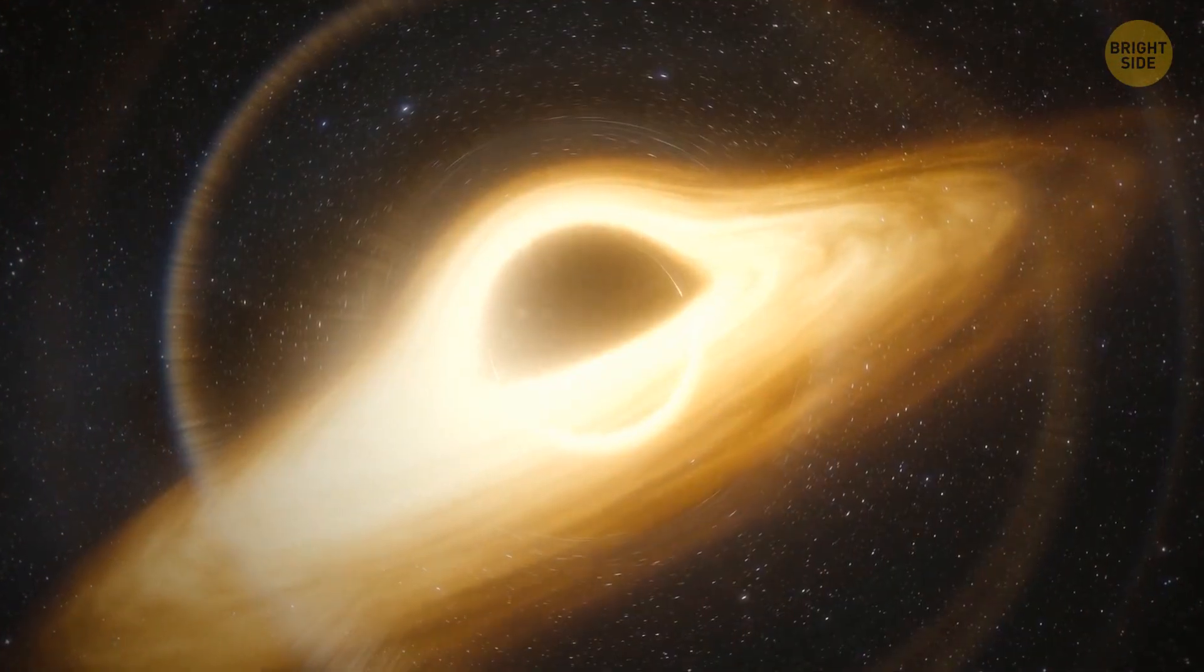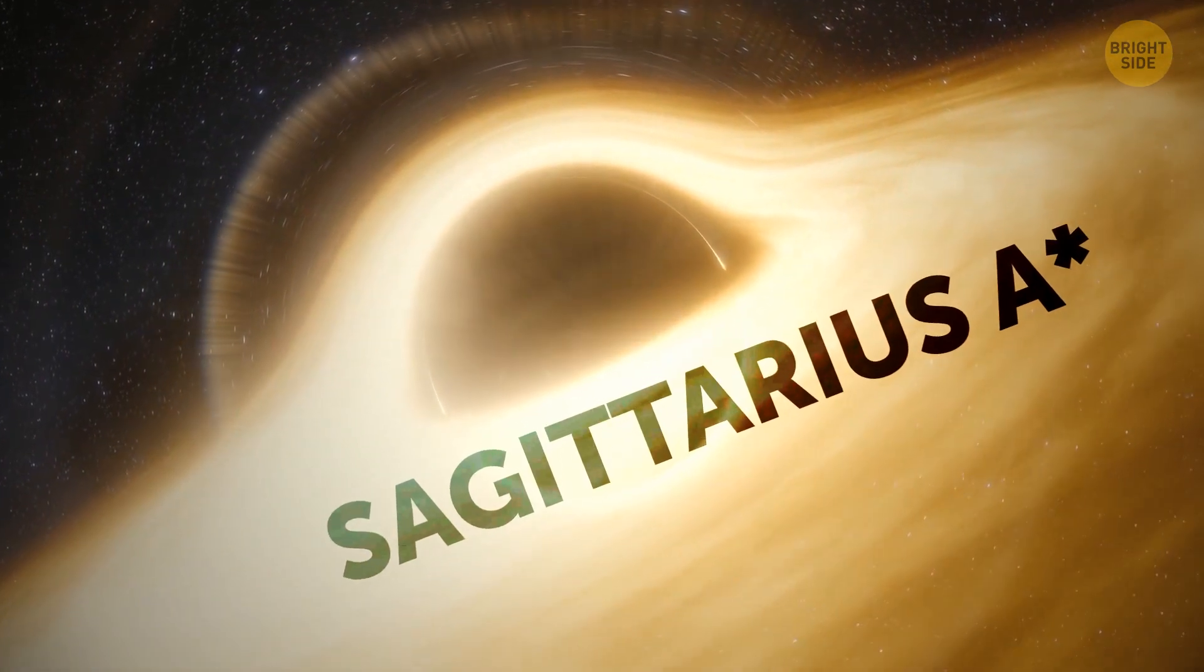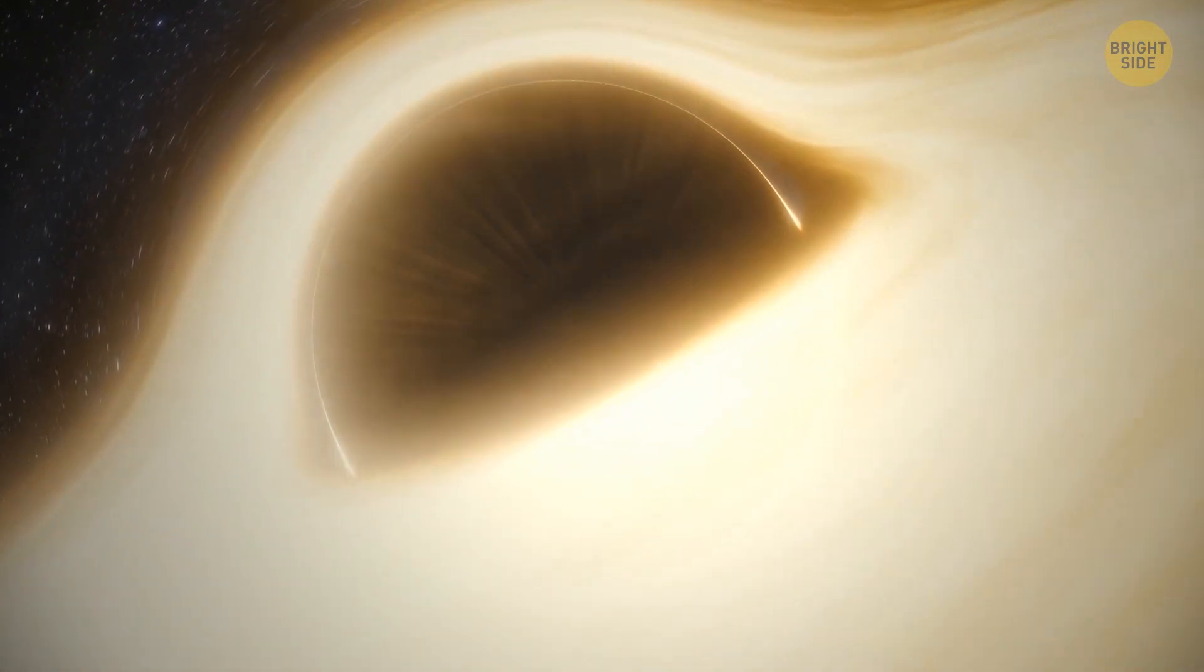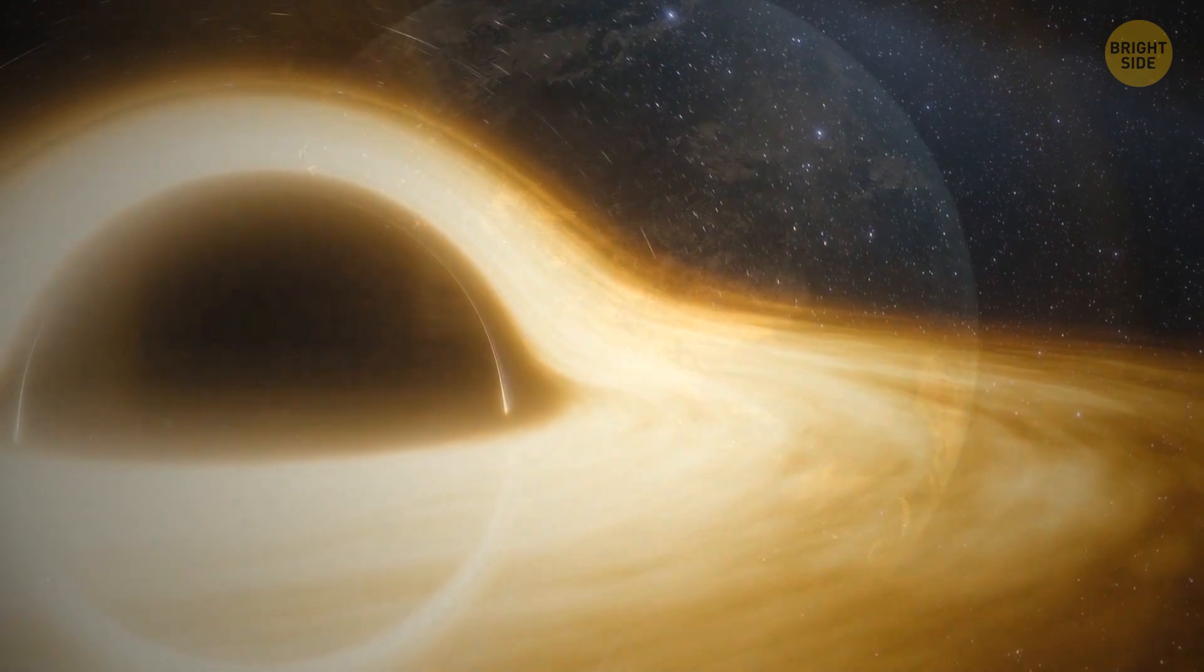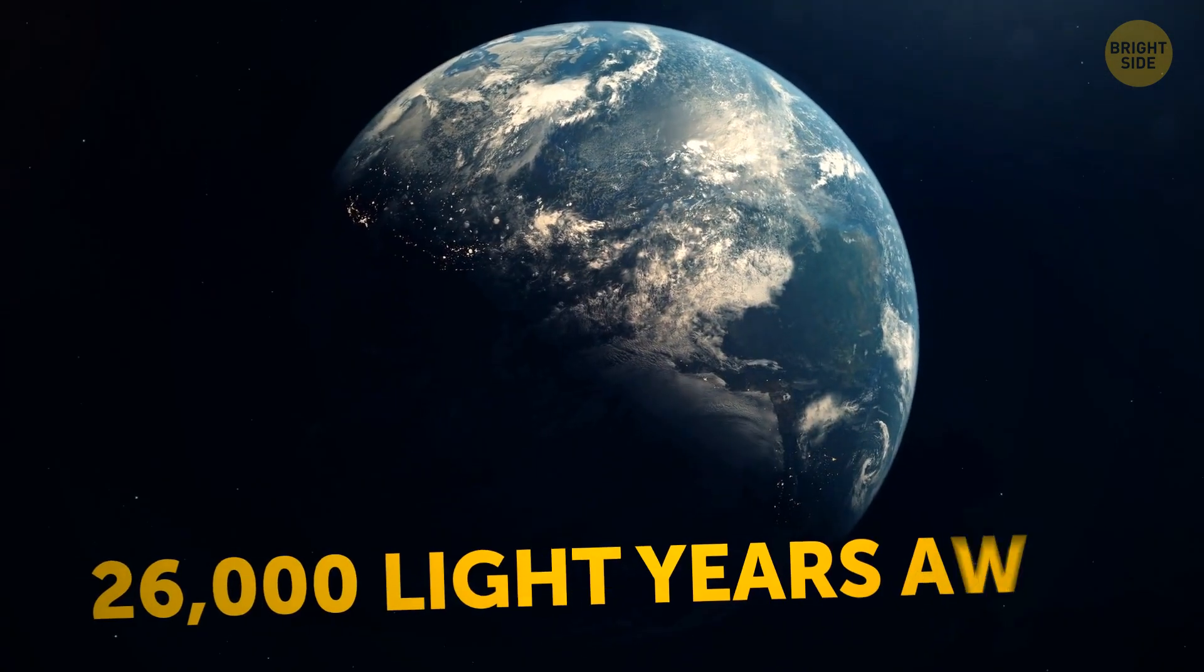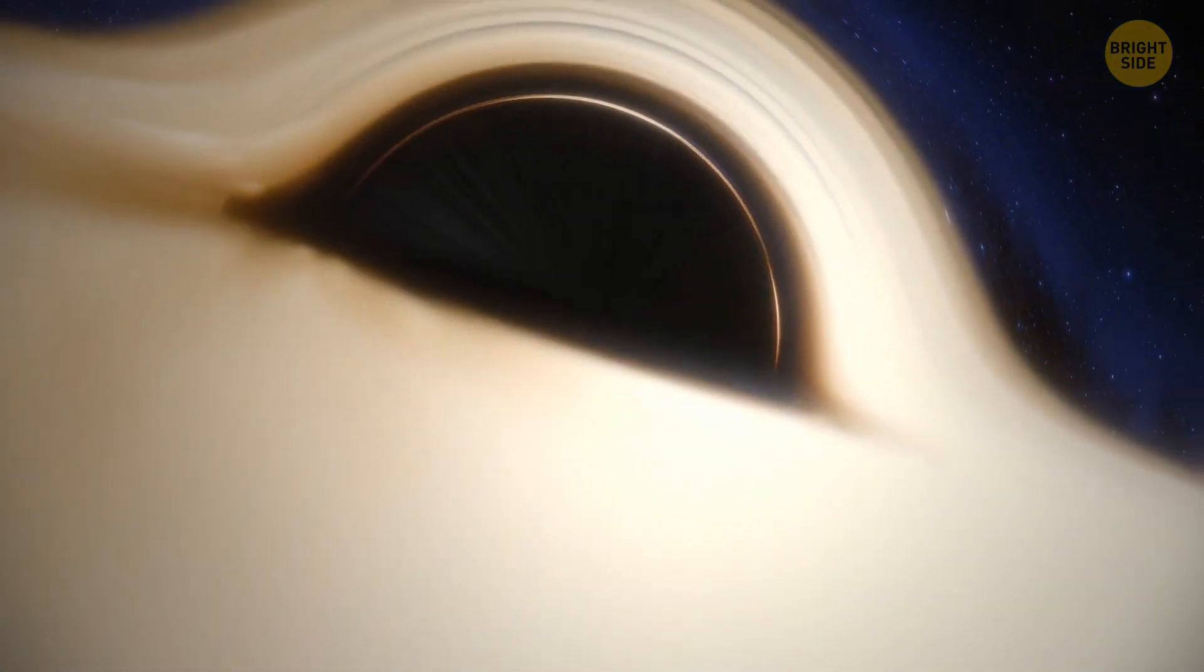There is a supermassive black hole right in the middle of the Milky Way galaxy. Its name is Sagittarius A star, and it's 4 million times as heavy as the Sun. And nope, we're not going to be pulled into this hole. It's more than 26,000 light-years away from Earth, and that's too far for this monster to have any influence on our planet.